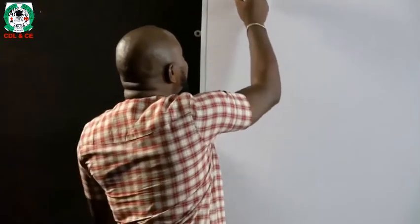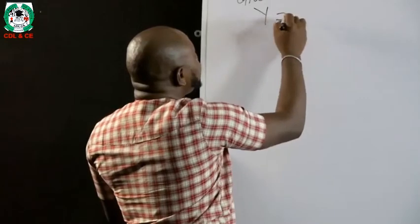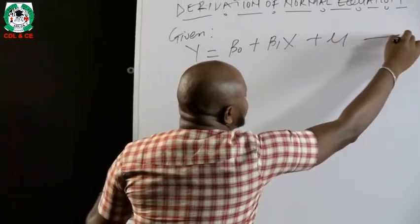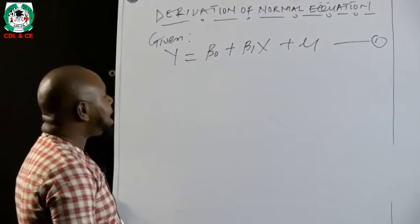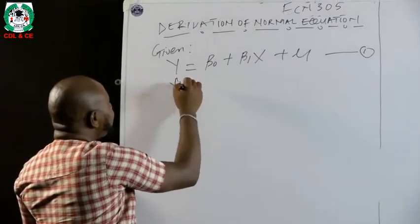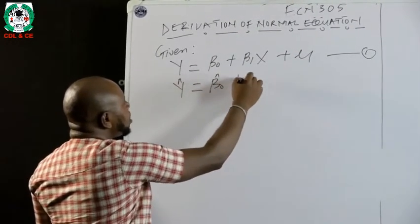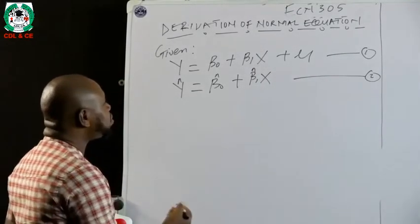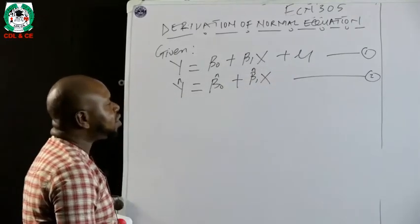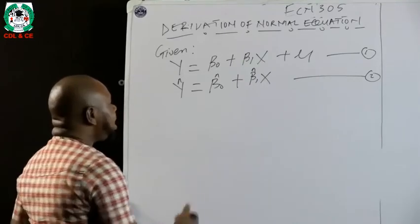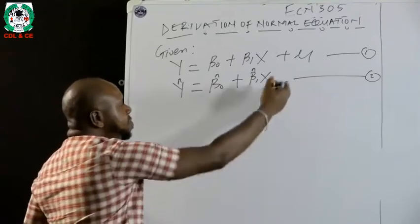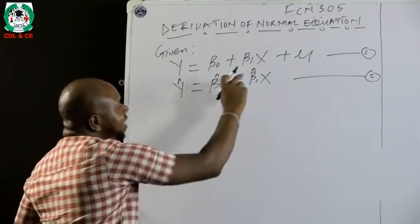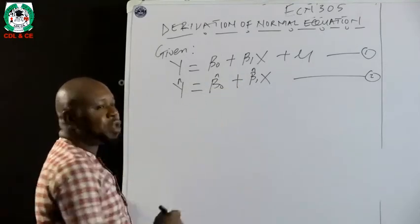Given a simple regression model: Y equals beta-naught plus beta-1 X plus U — call this equation one. After this model has been estimated, we have Y-hat equals beta-naught estimate plus beta-1 estimate times X — equation two. In equation one we have the error term U; in equation two there is no error term, because equation one has been estimated. The purpose of the error term is to capture other factors that do not appear in the model but are equally important in influencing the dependent variable.